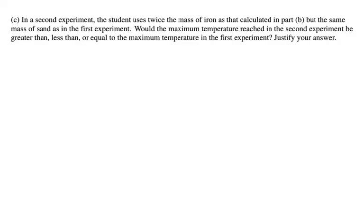Part C: In a second experiment, the student uses twice the mass of iron calculated in Part B, but the same mass of sand as in the first experiment. Would the maximum temperature reached be greater than, less than, or equal to the first experiment's maximum? Justify your answer.